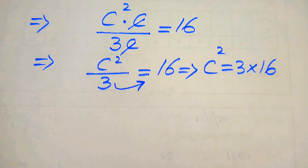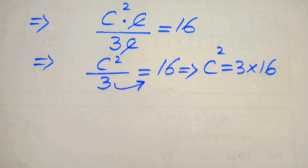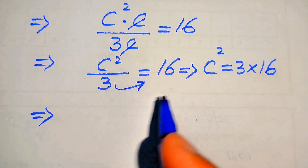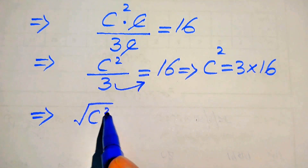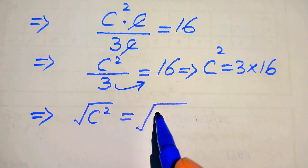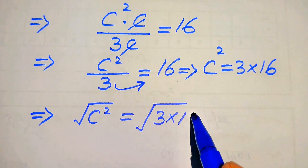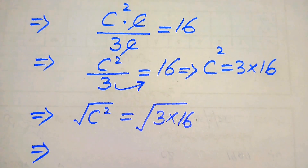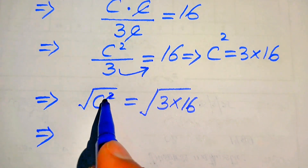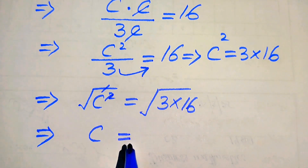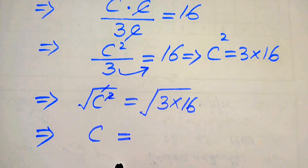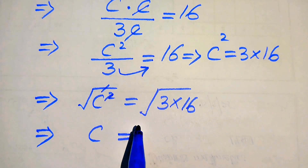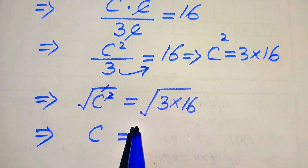Because we are solving this problem for the values of c, we need to take the square root on both sides. When we take the square root, it will be written as: square root of c squared equals square root of 3 multiplied by 16. Now we need more simplifications — the square and the square root cancel, giving us c. Remember that when we take the square root on both sides, we write the plus-minus sign.